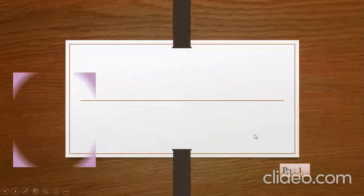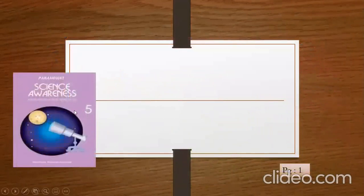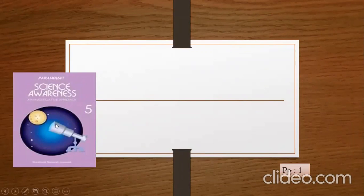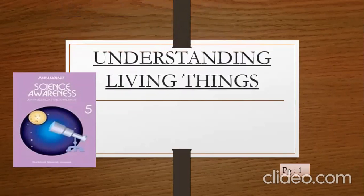So let's have a short review of your book. This is how your book looks like — that is Paramount Science Awareness. This is the book cover and we are going to start at chapter number one of this book. Chapter number one is on page number one. The name of the chapter is Understanding Living Things.